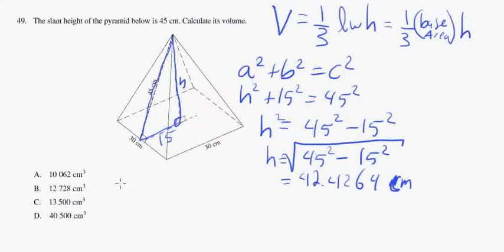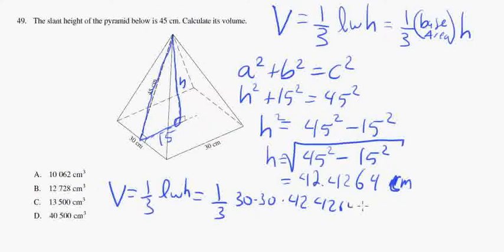Alright, so now we have the height. The volume is 1/3 length width height. So it will be 1/3 of 30 times 30 times 42.4264, which is going to be about 12,728 centimeters cubed.